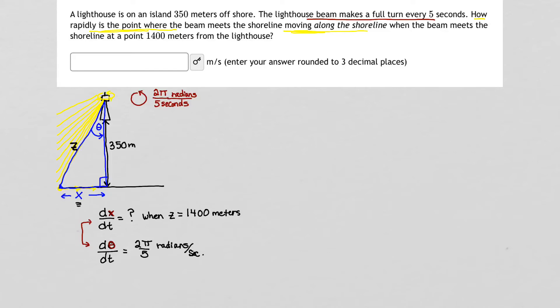So SOHCAHTOA. Remember that tangent is opposite over adjacent. So I could say that for this particular picture, the tangent of θ is opposite x over adjacent 350. So the tangent of θ is x over 350, opposite over adjacent. This equation, this formula relates θ and x.